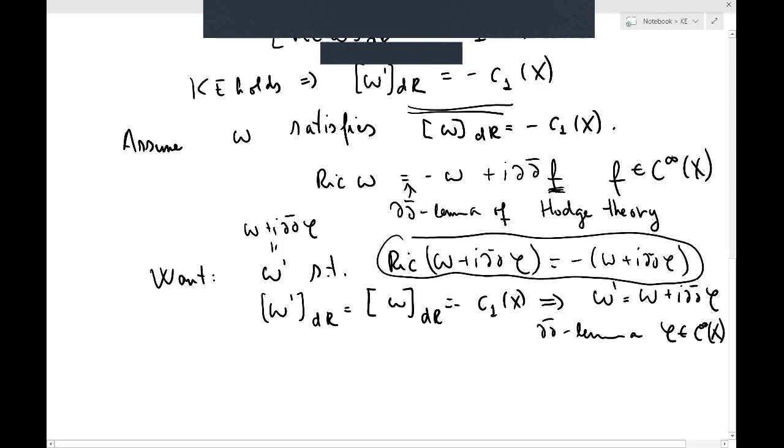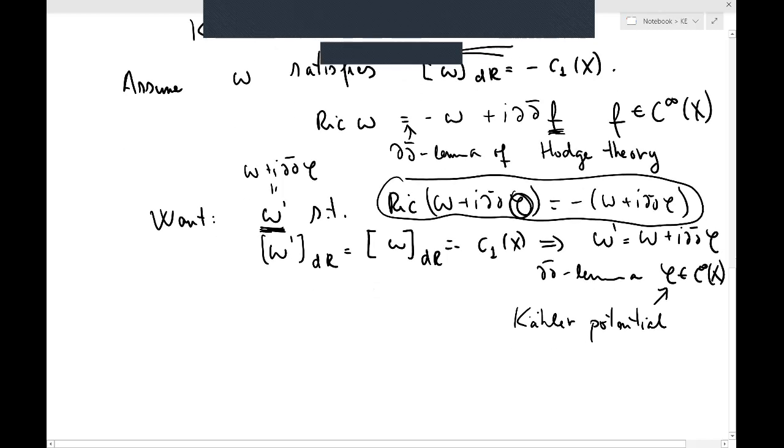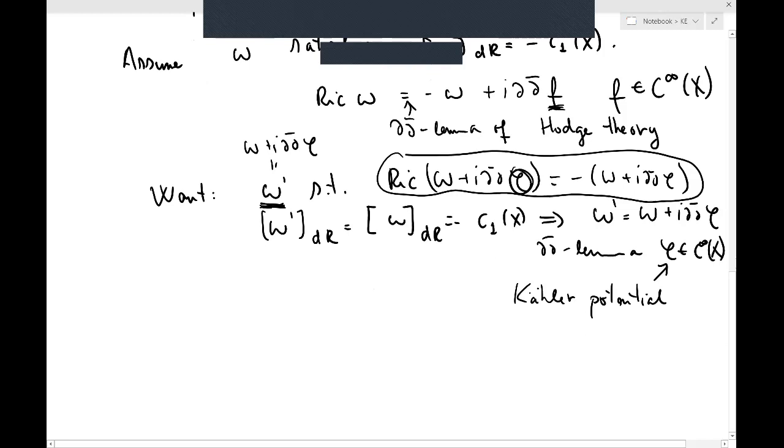Okay, so this is what we want. And then the reason why I'm insisting on this specific form, because this specific form of the equation tells you that we're actually, from now on, looking for not a Kähler metric, but actually we're looking for a function, a Kähler potential. So φ is a Kähler potential. This is sort of a typical occurrence in geometric analysis. You're looking for geometric objects, and you realize that after imposing appropriate amount of constraints, you could actually replace these geometric objects by functions, so-called potentials.